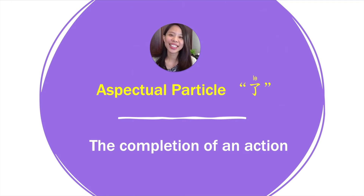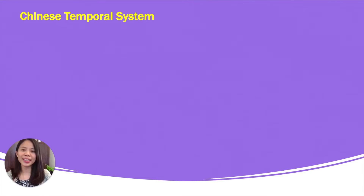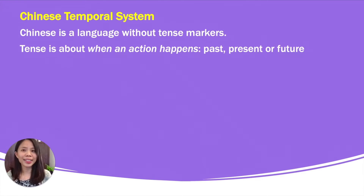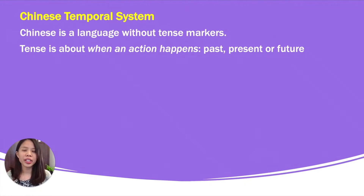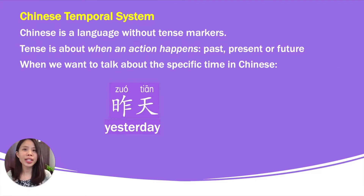大家好,我是李老師。 Today we are going to learn a very important practical topic. First, let's focus on the Chinese temporal system. Chinese is a language without tense markers. Tense is about when an action happens — in the past, present, or future. When we want to talk about specific time in Mandarin, we have to use tiny words.